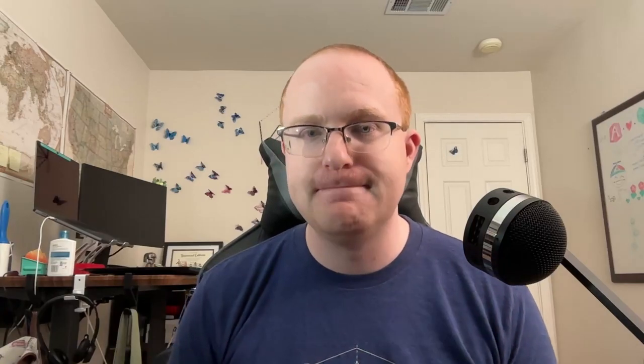There's one primary change I've made that was intended partially to support hydration, but also just completely changes how things work in HydroActive since the last video. I want to spend some time breaking down exactly what that is and why I made those changes. In the previous video, I showed Comp.Live, which is a really powerful API. It queries for the provided selector, asserts that something was found, deserializes the contents, initializes a signal from those contents, binds that signal for future updates to the DOM, and then returns it.